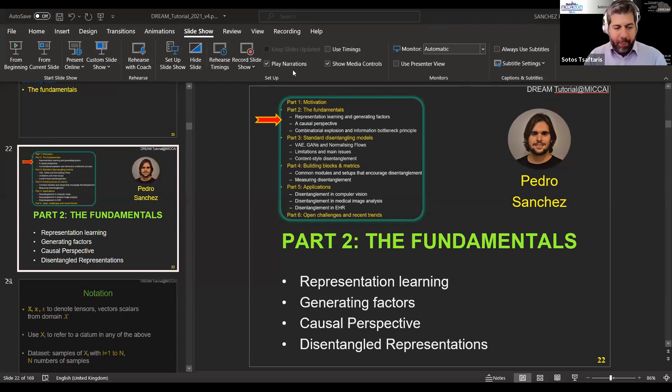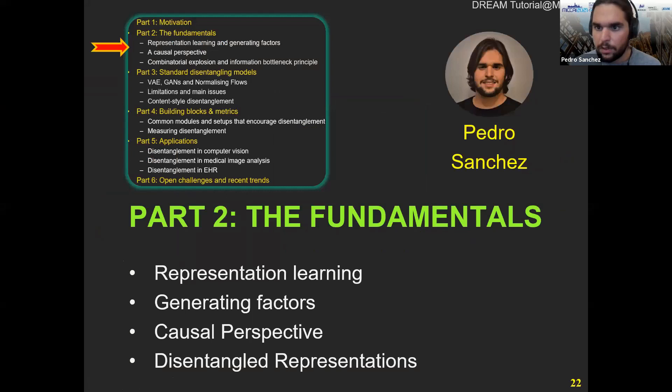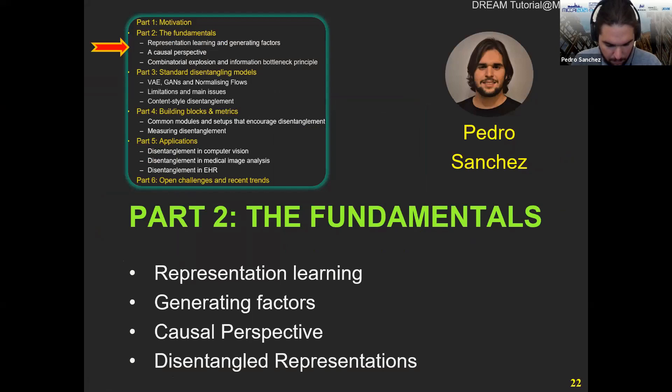Thanks for the nice motivation introduction. My name is Pedro, and I'm going to present the fundamentals part. We're going to cover some theoretical parts around representation learning and the understanding of generating factors from a compositionality perspective and a causal perspective, and move to disentangled representations — try to explain a formal definition of disentangled representations, some identifiability results, and why it's important that we understand our problem well and introduce domain knowledge for disentanglement.